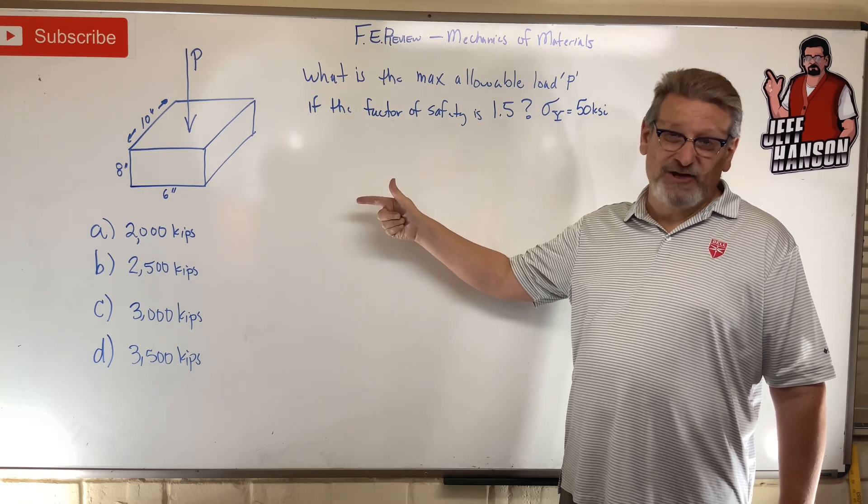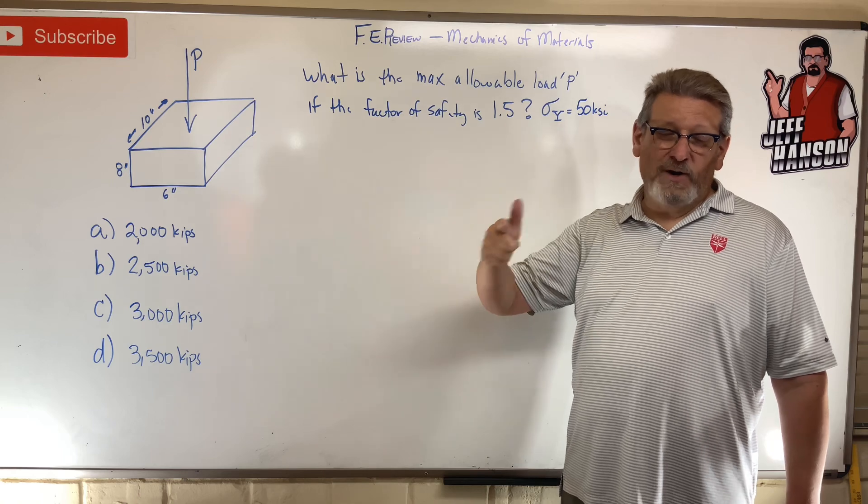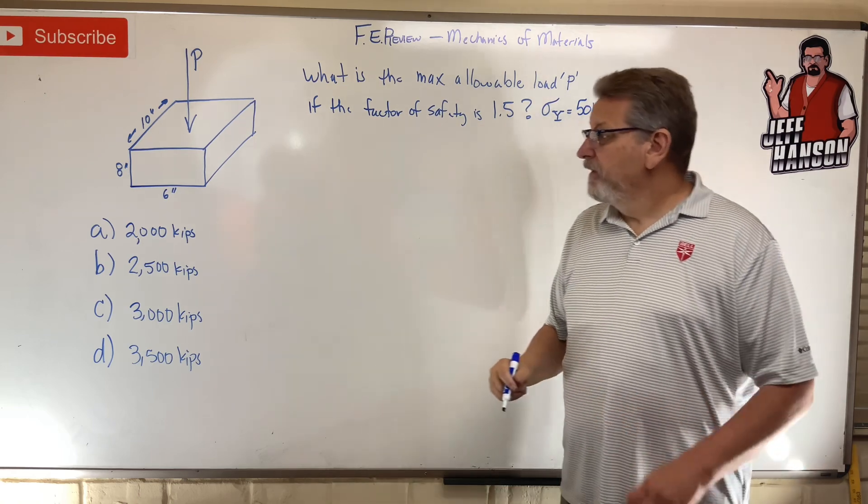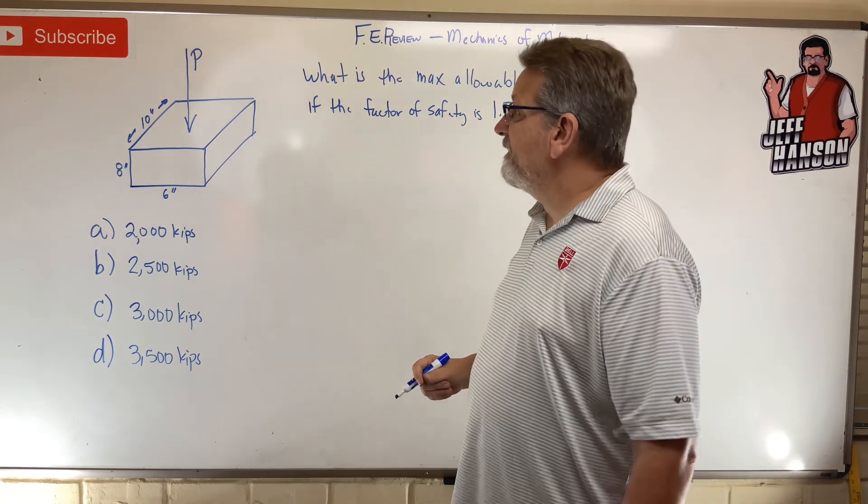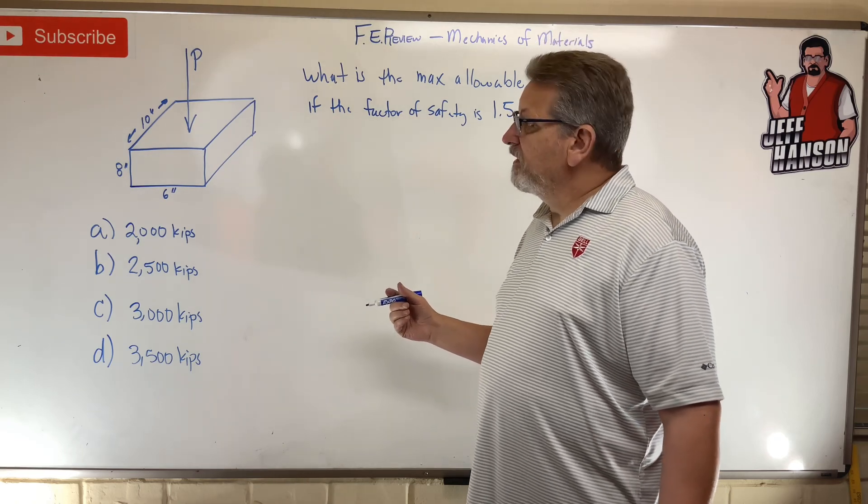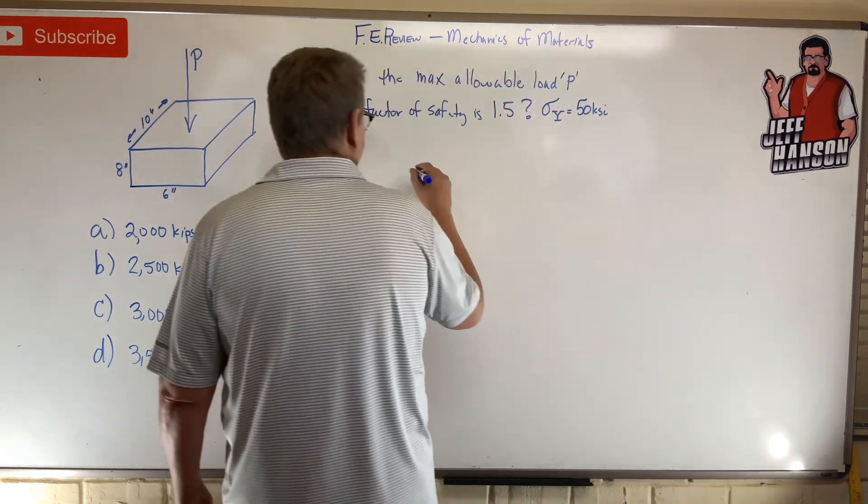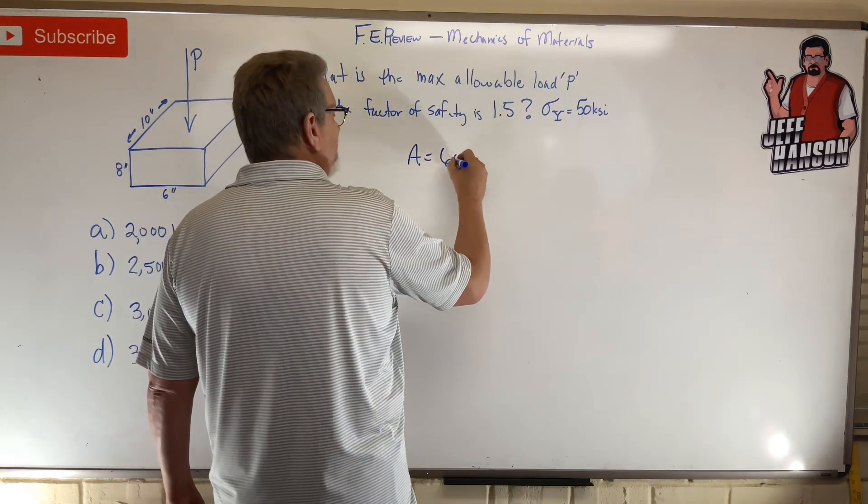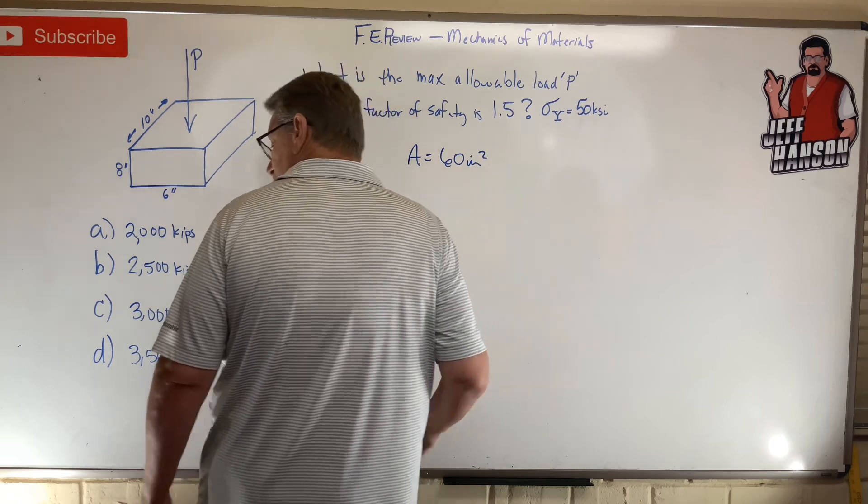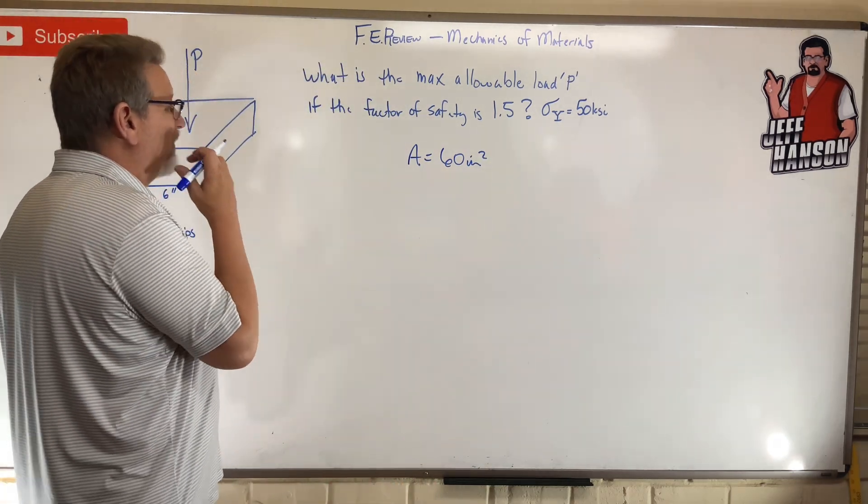All right, did you do it? Let's go team! First thing: what area is that P acting over? I say it's 10 by 6, so area equals 60 inches squared. Now, what is the first thing I'm going to do?